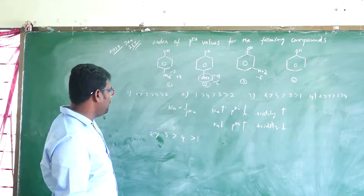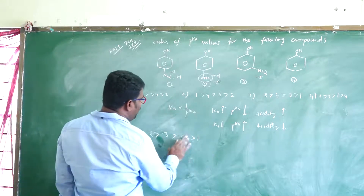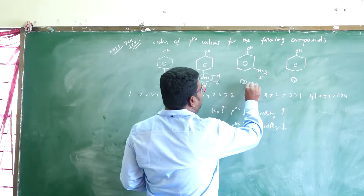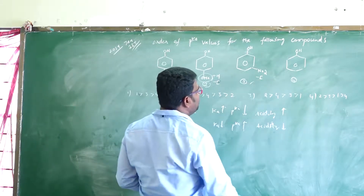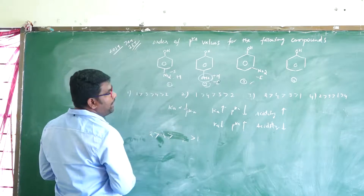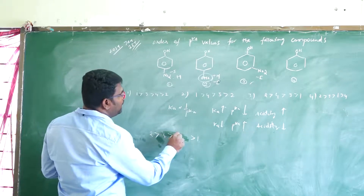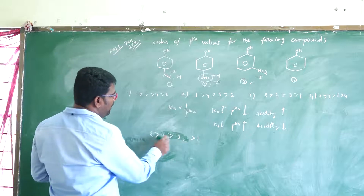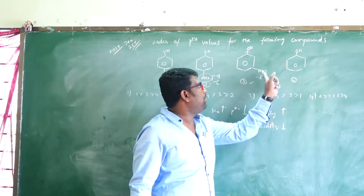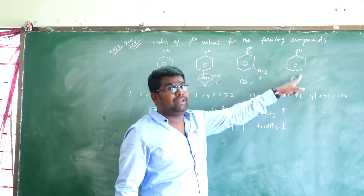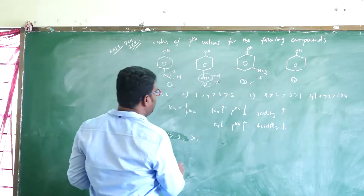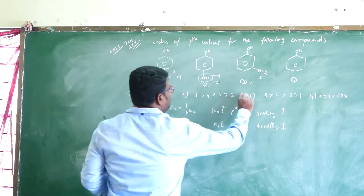Correction: the reference here is the fourth compound. The fourth one has a -I effect, so the fourth one has a higher PKA value than the third one. The compound with least acidity compared to the third is the fourth one, so the fourth one has higher PKA value. This gives us the final order.